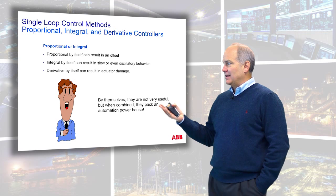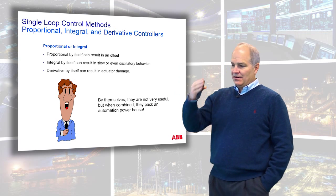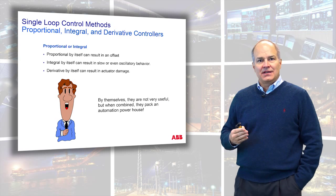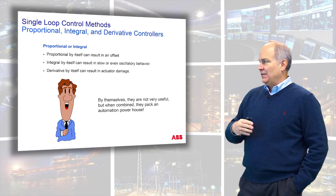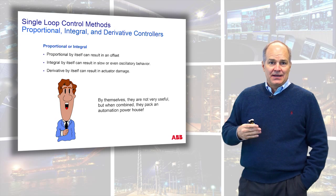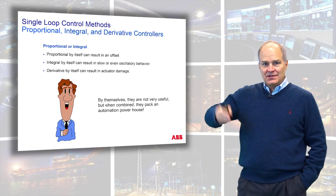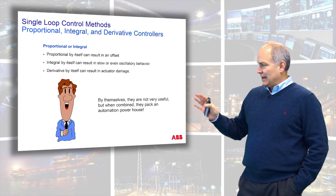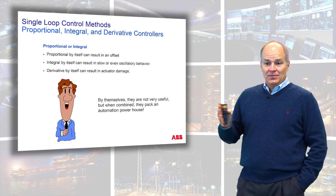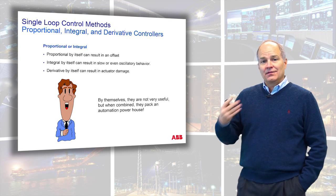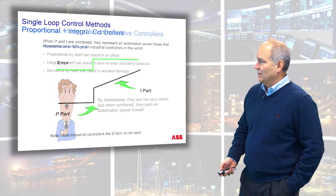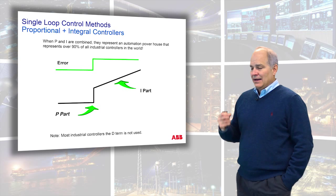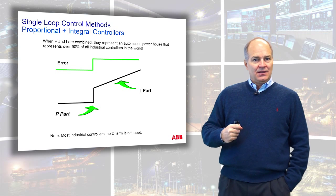Proportional by itself isn't used that much. Integral by itself is just not fast enough to catch up with errors. Derivative is never used by itself or you would tear up your actuator. By themselves they're not very powerful, but when you put them together they're very powerful.